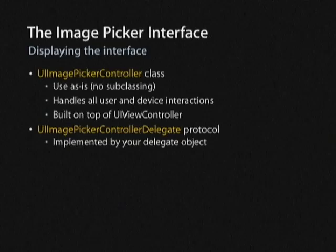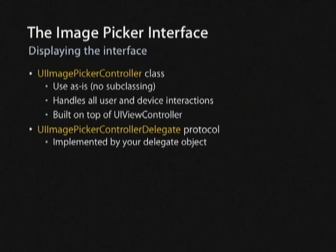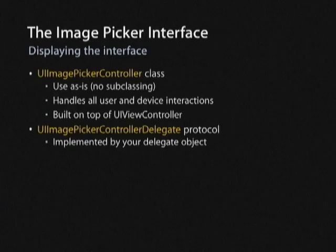You use a UIKit class called UIImagePickerController. You don't have to subclass — just instantiate it in your view controller and go. This handles all the user and device interactions and is built on top of UIViewController. You don't have to worry about firing up the camera; you simply let UIImagePickerController do that and take control back once the user has selected an image.